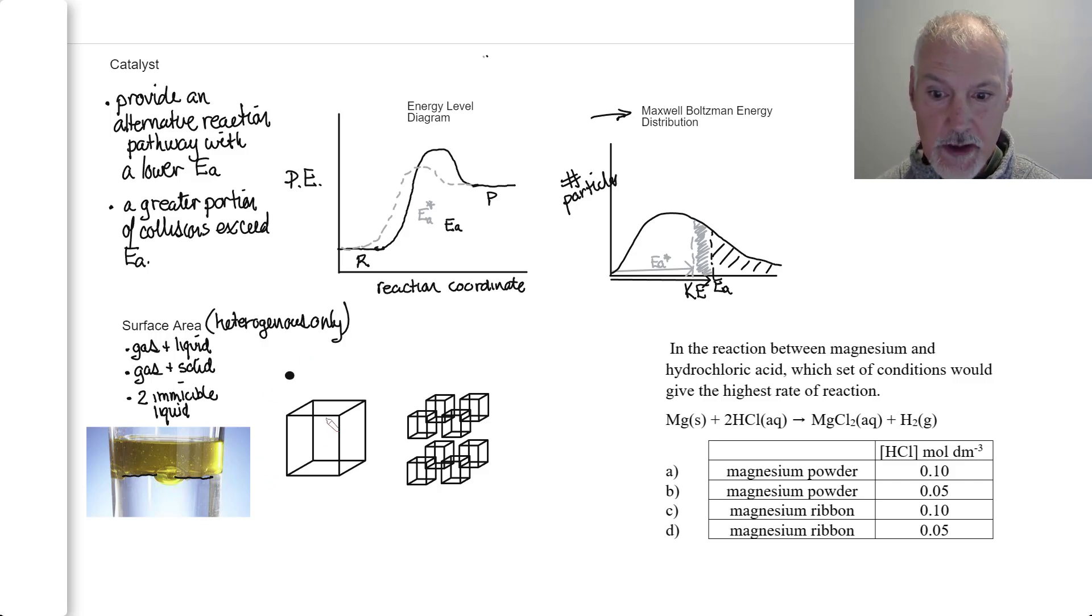Surface area effects only come in when we're dealing with heterogeneous systems. So here I have a solid cube, and I'm going to say for sake of argument, it's a 2 cm by 2 cm by 2 cm cube. Now, the surface area of that cube would be 2 by 2, that's the area of one face, and there's six faces altogether. So the surface area here would be 24 cm².